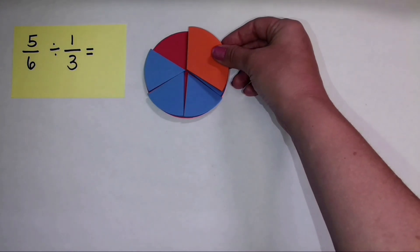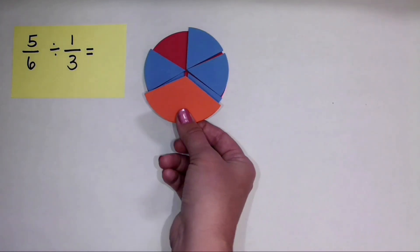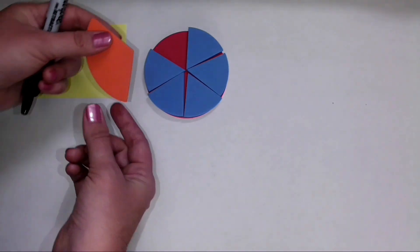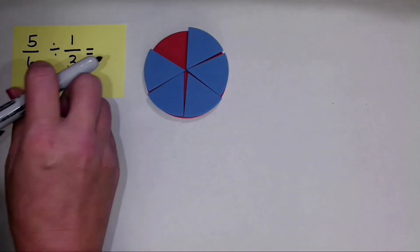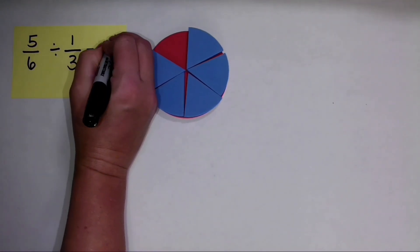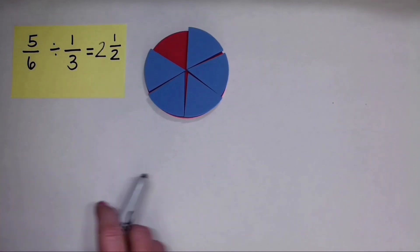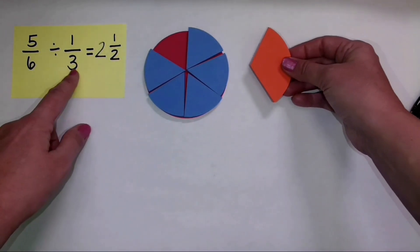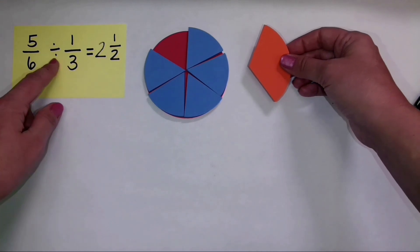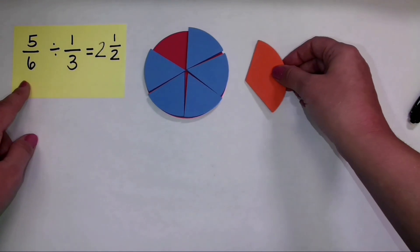So what is our quotient? I can make one, two, and one-half groups when I ask myself, how many one-third groups can you make with five-sixths?